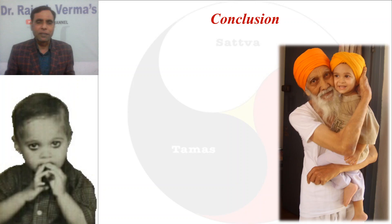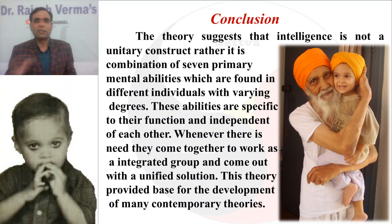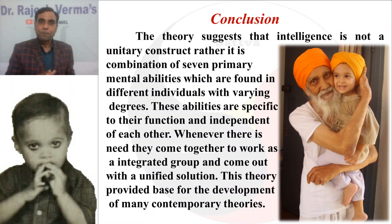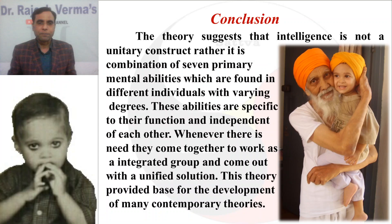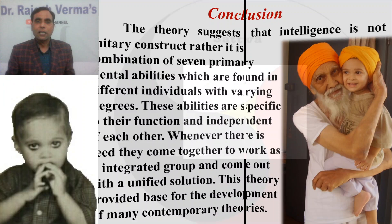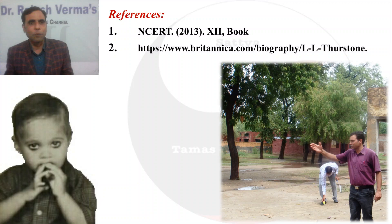In conclusion, Thurston's theory suggests that intelligence is not a unitary construct. Rather, it is a combination of seven primary mental capacities or abilities found in different individuals with varying degrees. These abilities are specific to their function and relatively independent of each other, yet whenever there is a need, they come together to work as an integrated group and produce a unified solution. This theory provided a base for the development of many contemporary theories of intelligence.